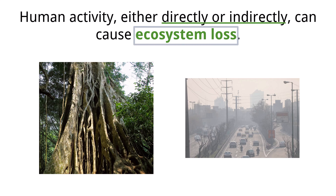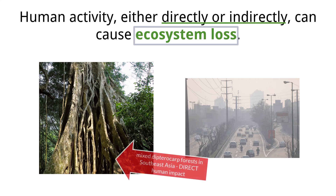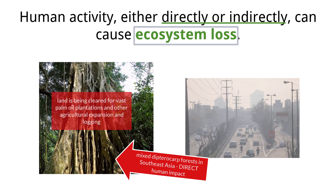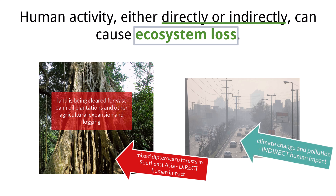An example you need to know for the IB exam of a direct activity is the destruction of mixed dipterocarp forests in Southeast Asia. These biodiverse rainforests are being cleared at a high rate, primarily to make way for vast palm oil plantations, other agricultural expansion, and logging. Indirect human impacts also contribute to ecosystem loss, such as climate change altering habitats or pollution making ecosystems uninhabitable. The ongoing loss of these ecosystems leads to species extinction, reduced natural resources, and less stable environments.